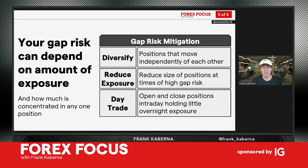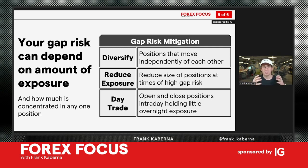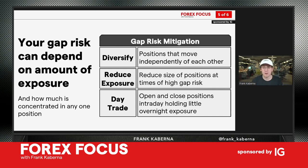How can you mitigate gap risk? One of the best ways — though not always practical — is closing and liquidating all your positions daily, weekly, or regularly. For a retirement account, IRA, or 401(k), that's nearly impossible. But you can diversify with positions that move independently of each other. Many people, especially as they get older, allocate less money to stocks and more to bonds, cash, U.S. dollars, gold, or other safe havens, so that if something happens over a weekend, your stocks might move one way while other markets move another way.